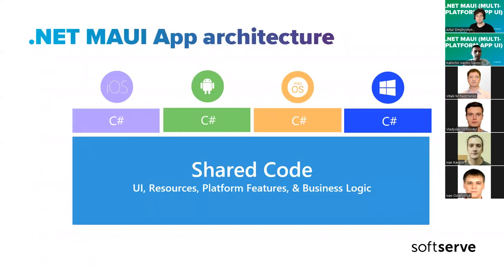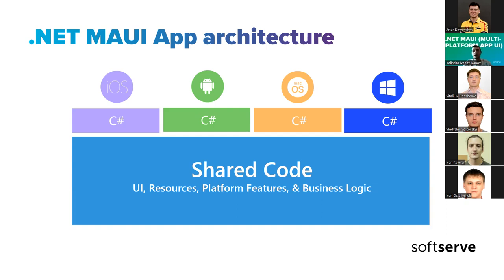The .NET MAUI architecture — a .NET MAUI application looks like this. The big important part is the bottom piece, which is the shared code base. These are the things that are going to be common and shared 100% across all the platforms. This includes the user interface, which is 100% shared across all. The user interface will be written in C# and XAML — the XML-based markup using its unique binding features. And if you're familiar with Xamarin, the transition between Xamarin and .NET MAUI will be very easy for you.